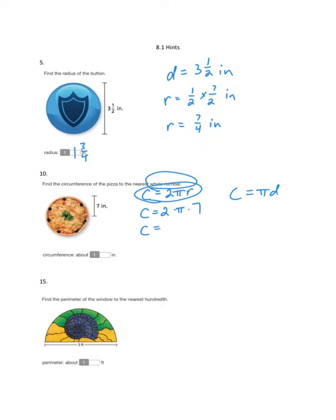On this one, because I'm working with 7, multiples of 7, I feel like it might be a good one to use 22 over 7 as my approximation for π. So if I have 14 over 1 times 22 over 7, I can simplify. And I can see that my circumference is about 44 inches. Now if I used 3.14 for π, I would get something very, very close to 44 inches. To the nearest whole number, it would still be 44 inches.